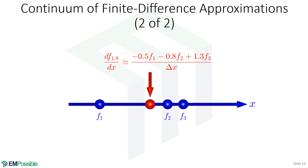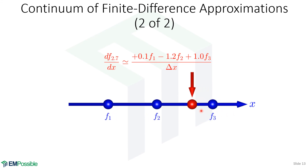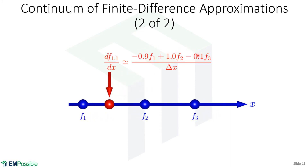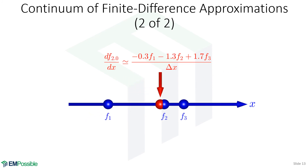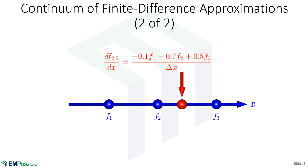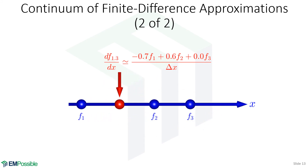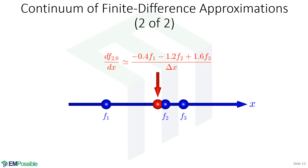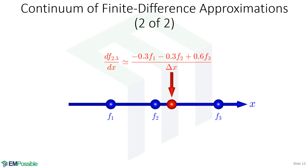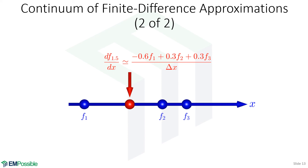Generalizing even more: we can vary where the function points are and where we're evaluating the derivative — even outside where our function values are — and examine how the finite difference coefficients change. Notice the form is always the same: a linear sum of the function values, multiplied by some numbers that come from the positions of all the points. People talk about central, forward, and backward, but those are just very specific cases. A finite difference is simply estimating the derivative from some smattering of function values, always in the form of a linear sum.